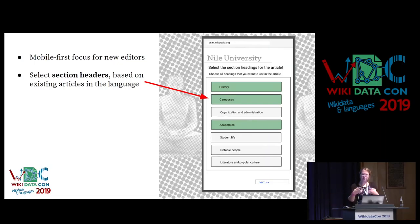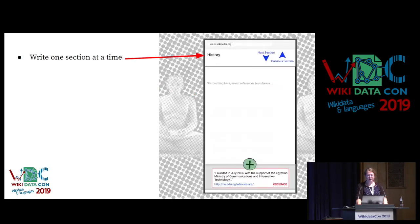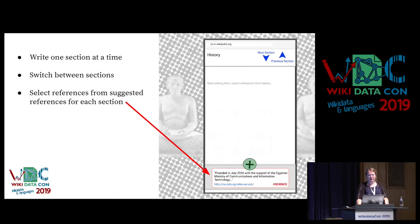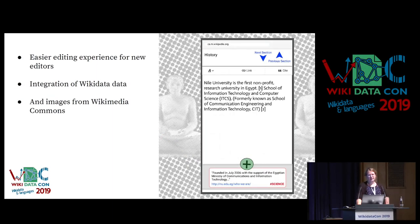Most of the communities we aim to work with are very heavy on mobile editing, so we do this mobile-first focus. It also forces us to break down into steps, which will lead to a step-by-step guide on how to write a new article. An editor comes, selects section headers based on existing articles in their language, writes one section at a time, switches between sections, and selects references for each section.